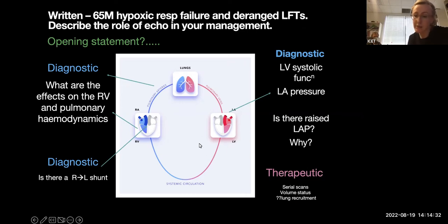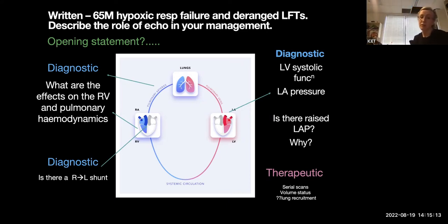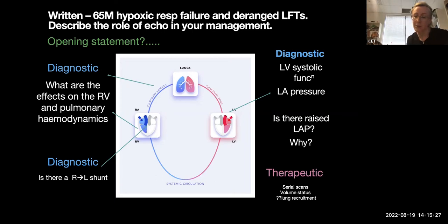In terms of the therapeutic role, we can talk about serial scanning: if you've changed PEEP, diuresed the patient, or started an inodilator, repeating imaging to see the impact on left atrial pressure, the RV, and pulmonary hemodynamics — including whether you've worsened shunt. Some mention of serial scanning is important. The therapeutic role also includes assessing volume status changes with fluid or diuresis, and maybe the role of lung ultrasound in assessing lung recruitment.